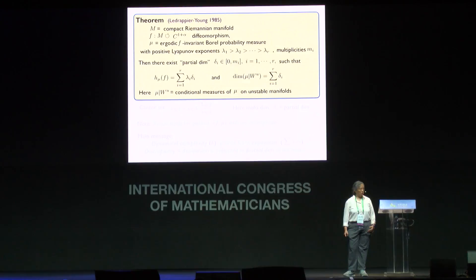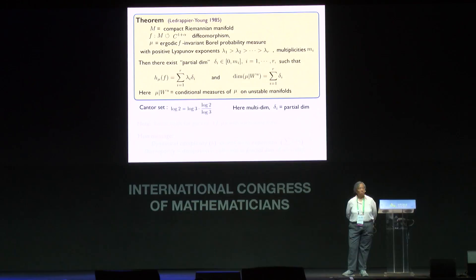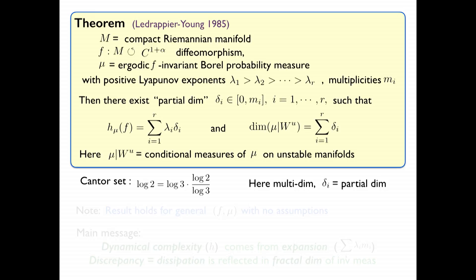Going back to the Cantor set: the degree of complexity is 2, so the left side of the entropy equality is log 2. There is only one direction and one Lyapunov exponent, so there is only one term. The derivative lambda is log 3, and that equals the Hausdorff dimension log 2 divided by log 3. This is a special case of the general result. This result is very general — it does not depend on the manifold, it works for all diffeomorphisms and all invariant measures. It goes quite a bit beyond the Cantor set.